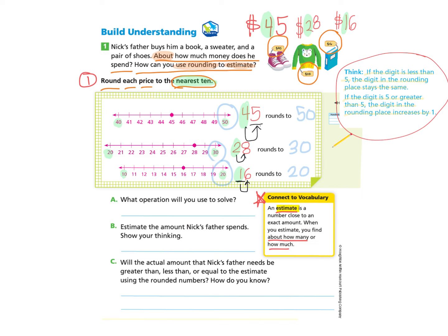Okay, now I need to do step 2, which is to solve the problem that we were trying to find. About how much money does Nick spend? I have the estimates of $50, $30, and $20 from the prices that were given. Let's look at part A. What operation will you use to solve?